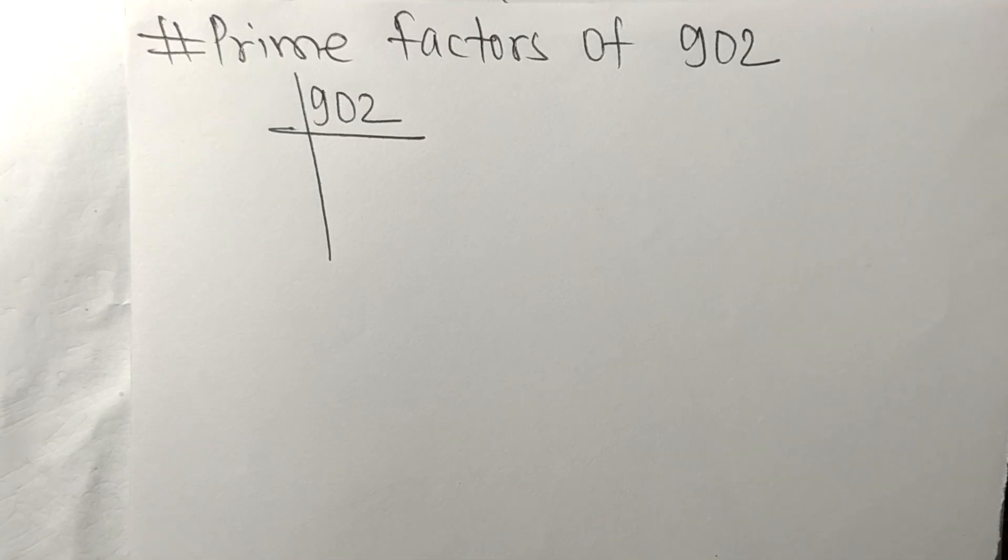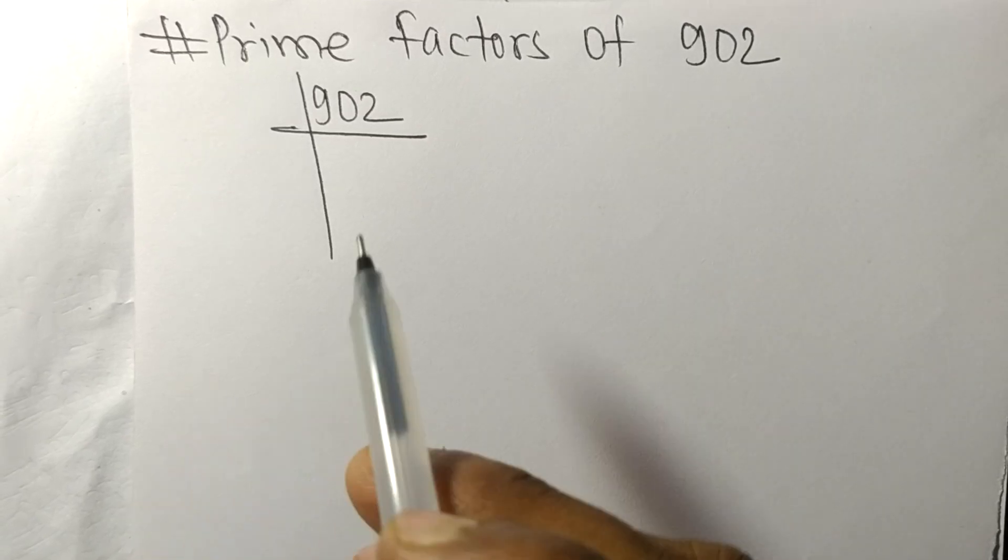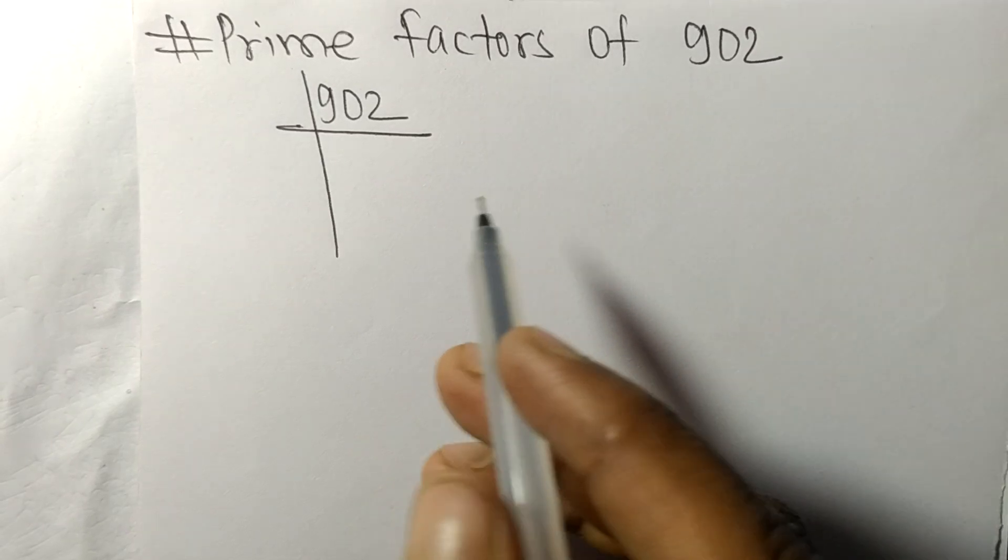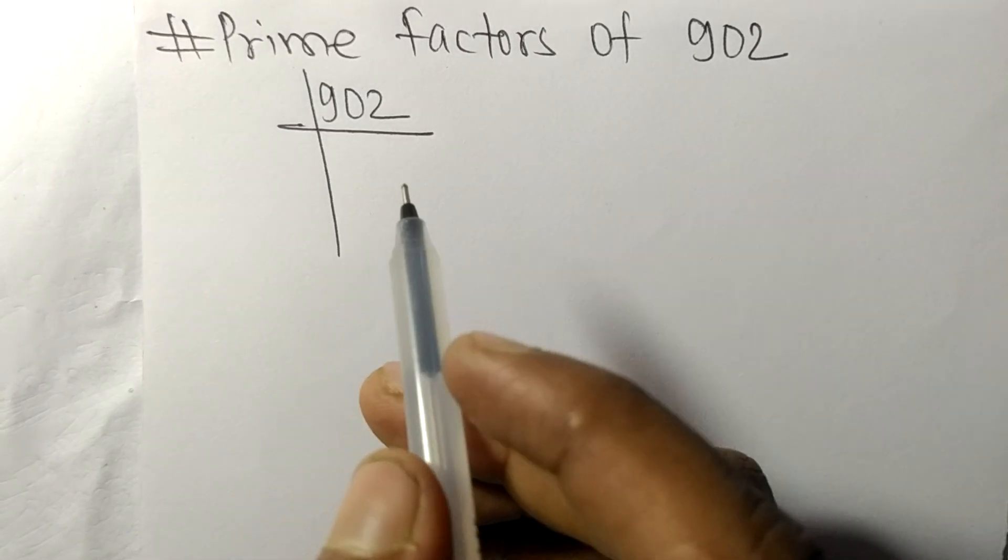So today in this video we shall learn to find the prime factors of 902. It contains an even number, so this whole number is divisible by two.